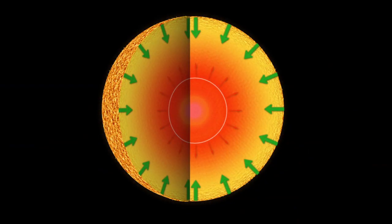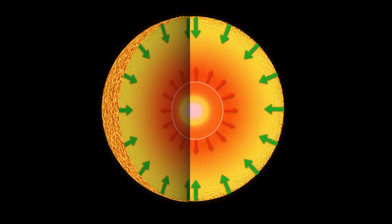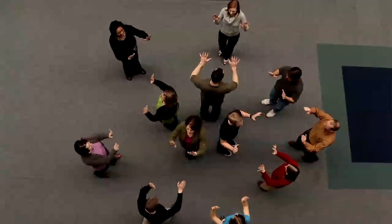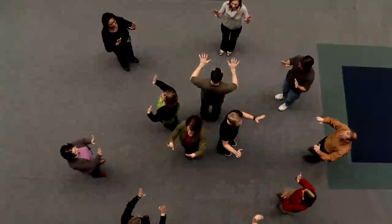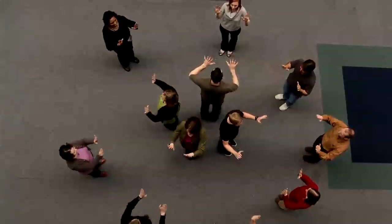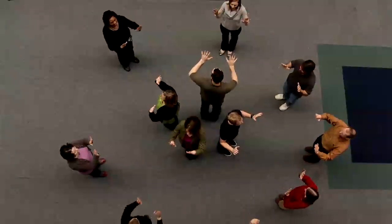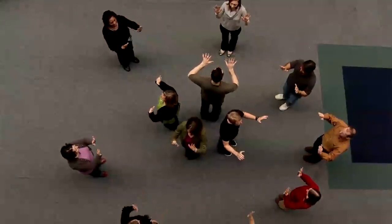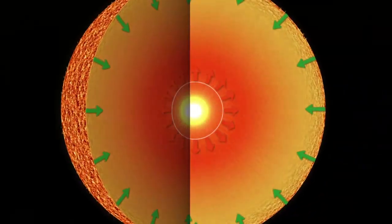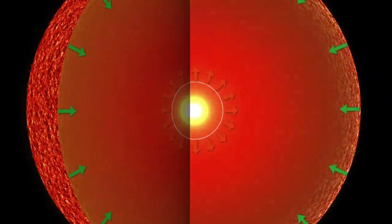The slight decrease in the size of the core makes it hot and dense enough to start fusing helium. The participants in the core raise their hands once more, as energy is again being generated at the center of the star. Participants in the shell take a step outward to represent the surge in energy, making the star larger than it was during the main sequence phase. The star has become a red giant.